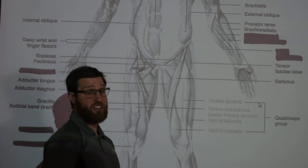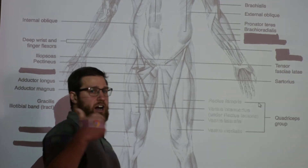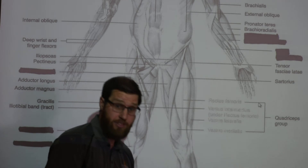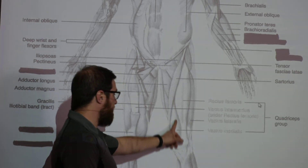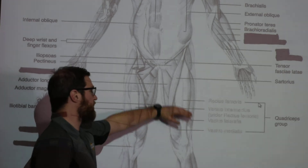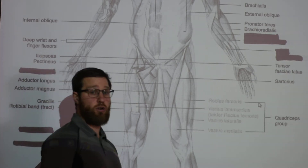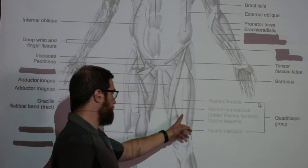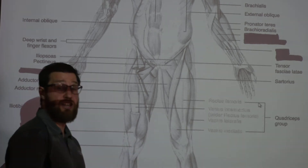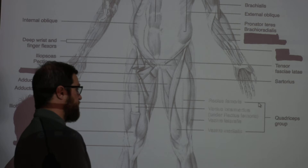Don't confuse the rectus femoris with the biceps femoris, which is on the posterior side. The remaining three quadriceps are the vastus group: vastus lateralis on the most lateral side, vastus medialis on the medial side, and vastus intermedius, which is deep to the rectus femoris. All four combine to create knee extension — it's a very powerful movement because of those four muscles working together.